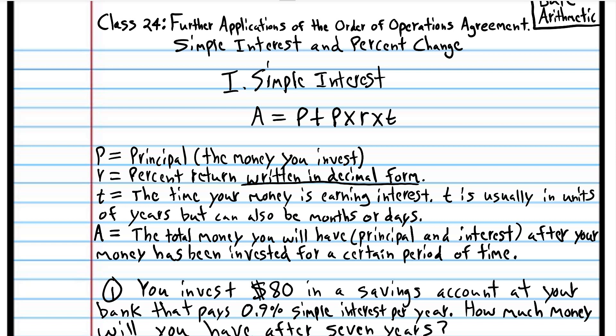Let's say you put $100 in your savings account and the account pays 1% simple interest per year. If you have $100 in the savings account for one year, the bank will pay you $1. So the total amount of money you'll have in the account after one year will be the original $100 that you put in plus $1, for a total of $101. That's simple interest.